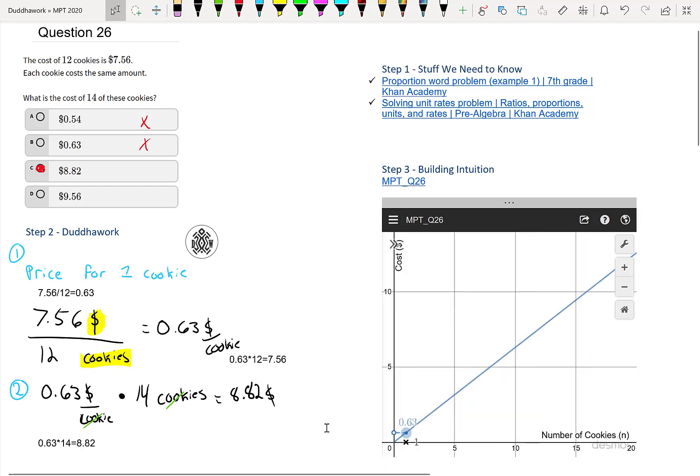Because we have something that's Y equals MX plus B. Our cost of the cookie is C. Let's call it C. And then that's our rate. And then that's our number of cookies. And then it's zero. If you buy zero, it's zero. You don't have some initial amount.